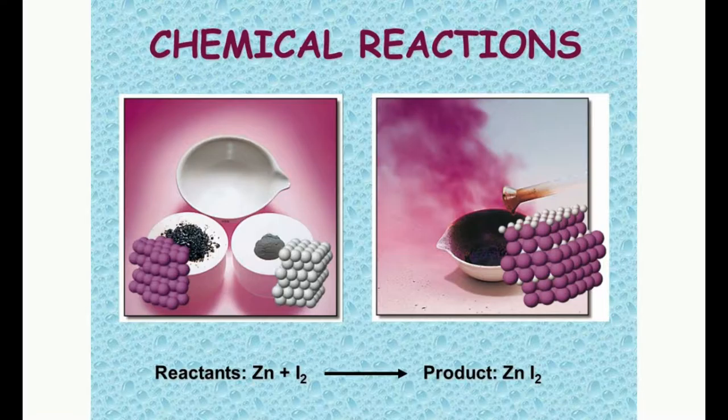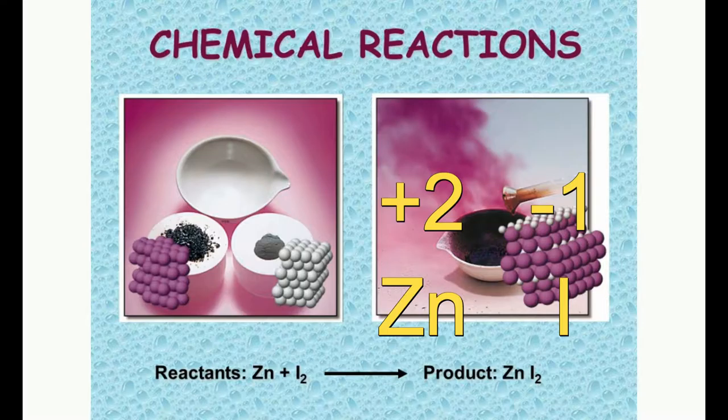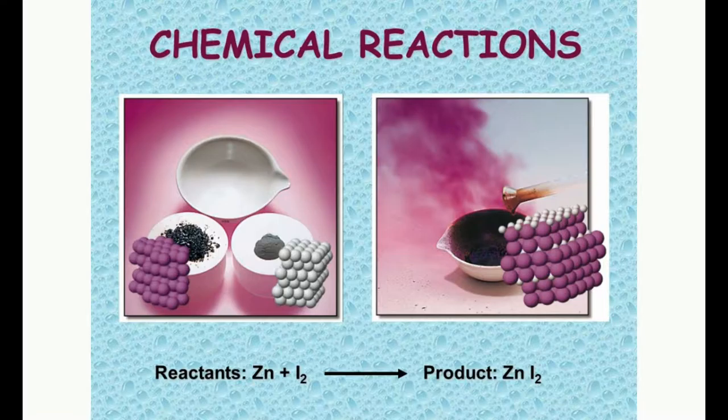We take all the ions and scatter them around — we've got zinc and we've got iodine, so we drop the subscripts. They go into ions. The charge of zinc is +2 and the charge of iodine is -1. We crisscross those charges and get ZnI₂. That's why it's ZnI₂ — not because we squished them together. We are still crisscrossing. It is very important that you know how to do that.